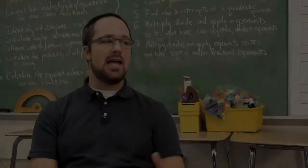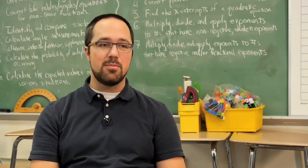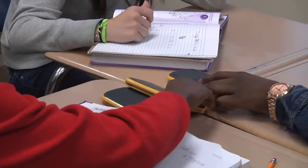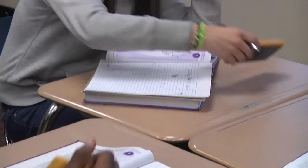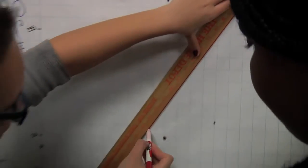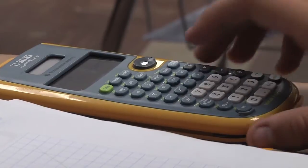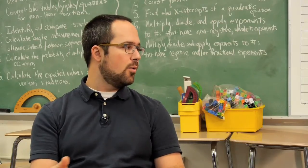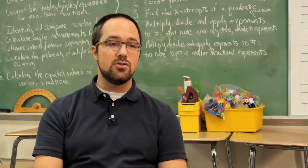The fifth common core mathematical practice is use appropriate tools strategically. And, again, a big part of the IMP curriculum is you give them access to all sorts of different types of tools. Rulers, protractors, calculators, graph paper. But to be honest, when I do these activities, I usually don't pass them out. They know there's calculators up there. And, you know, in these bins there's protractors and rulers.